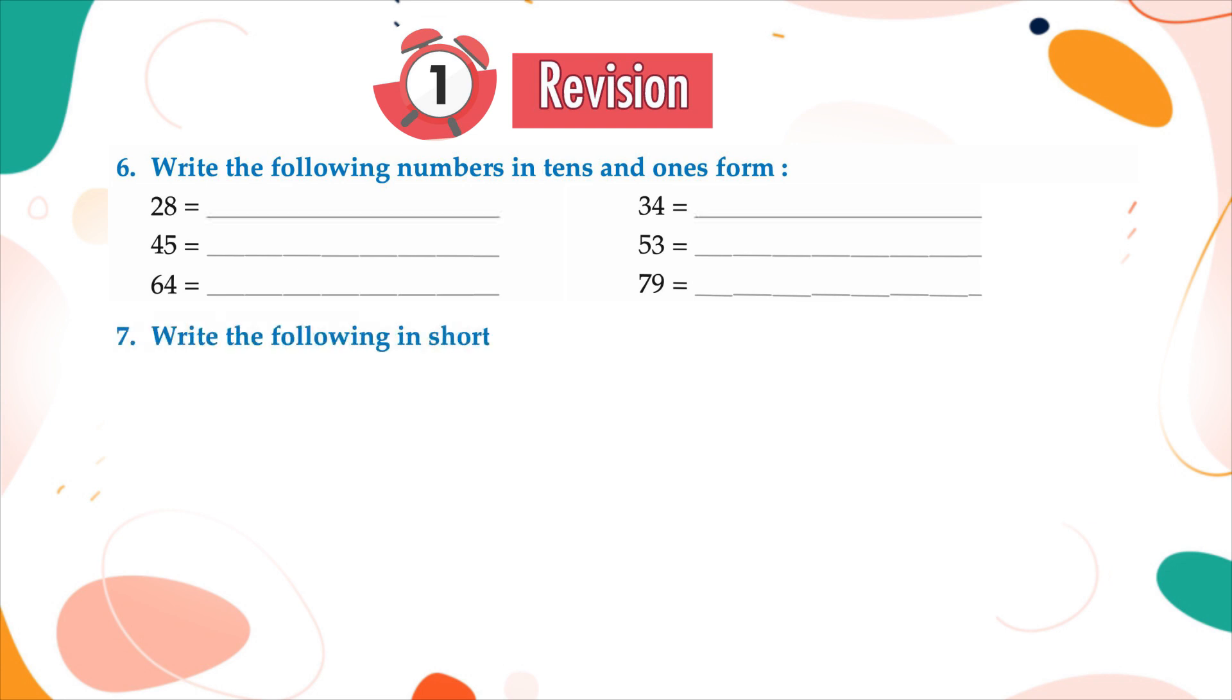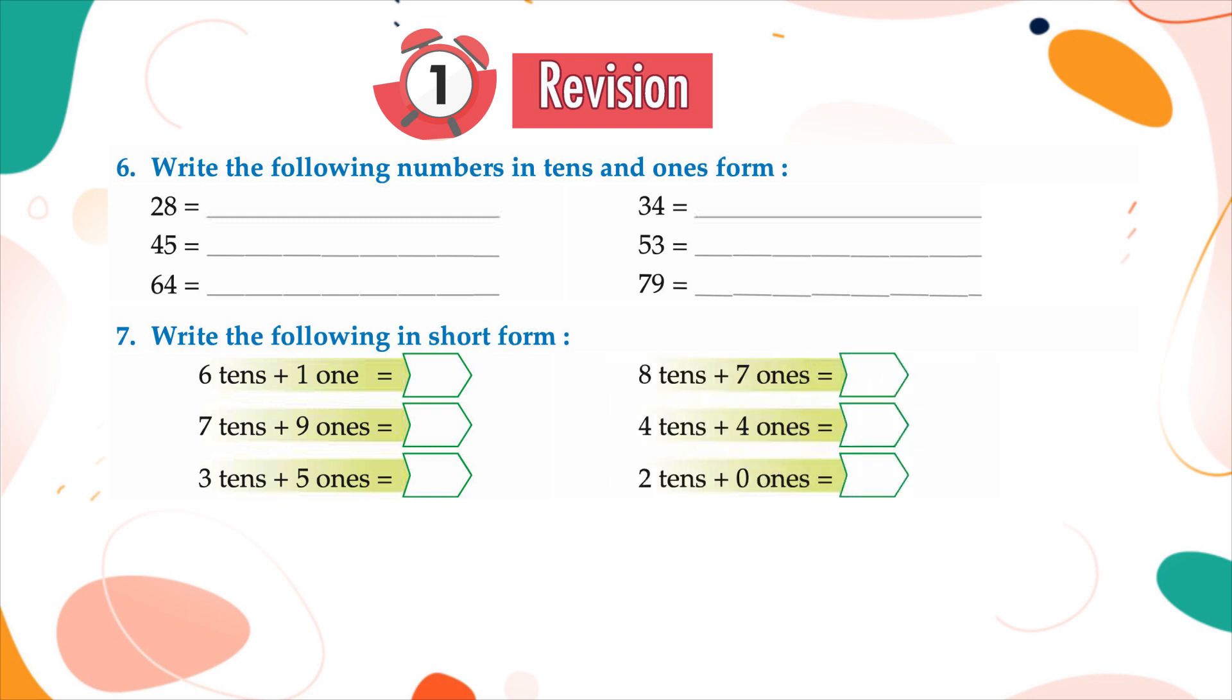7. Write the following in short form: 6 tens plus 1, 7 tens plus 9 ones, 3 tens plus 5 ones, 8 tens plus 7 ones, 4 tens plus 4 ones, 2 tens plus 0 ones.